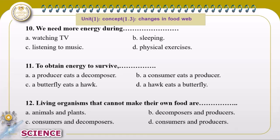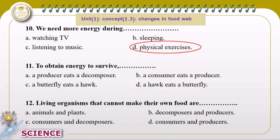We need more energy during physical exercise compared to watching TV, sleeping, or listening to music. The correct answer is physical exercise. To get energy, energy transfers from a producer when a consumer eats it — for example, from a butterfly when it is eaten. The correct answer is: a consumer eats a producer.